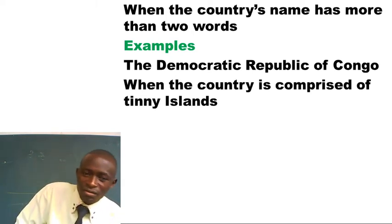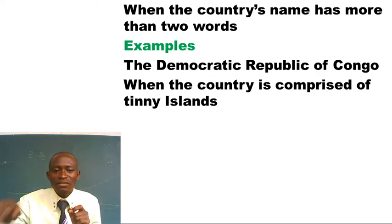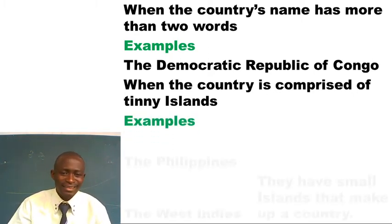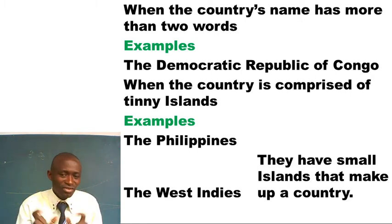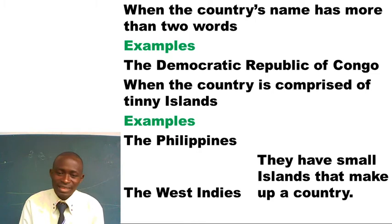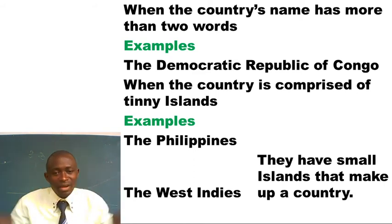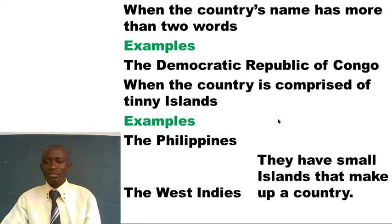The next case is when a country is comprised of tiny islands — areas surrounded by water. When you collect many of them, they make up a country. We have the Philippines — inside the Philippines there are many tiny places surrounded by water, so this country is introduced by article THE. We also have the West Indies, which also has only tiny islands — small pieces of land surrounded by water — and together they make up a country called West Indies.